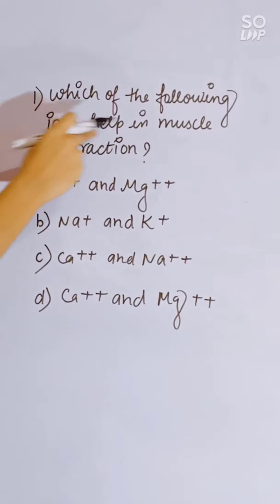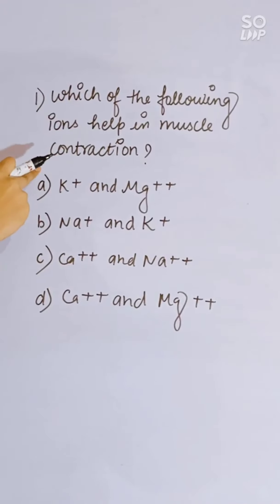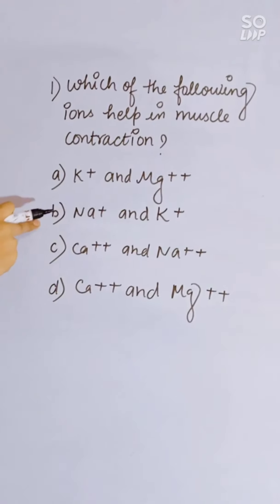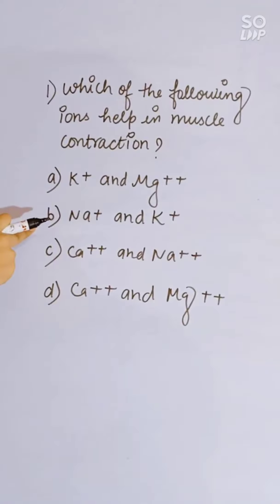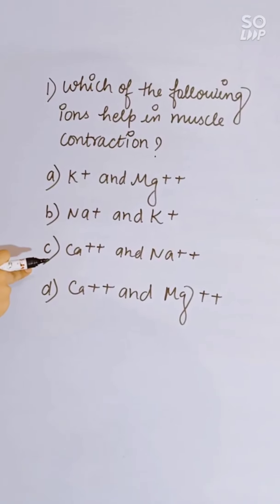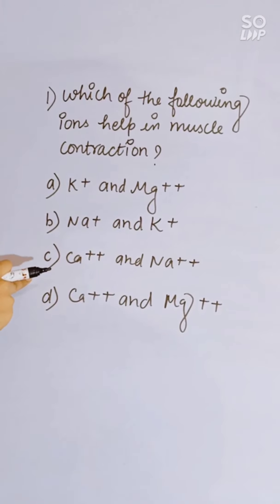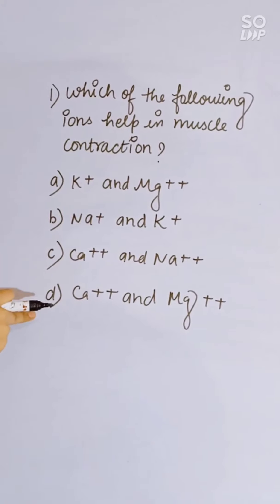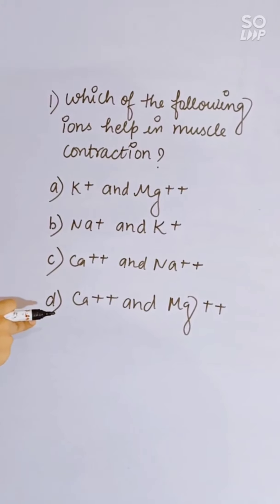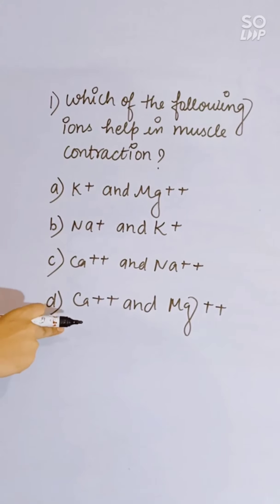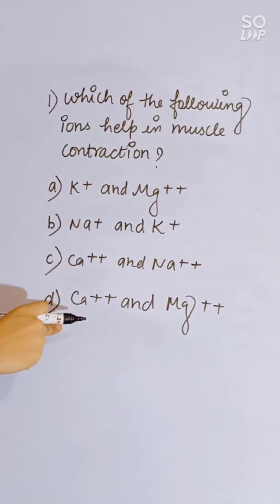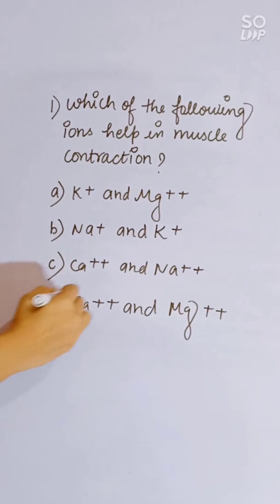Which of the following ions help in muscle contraction? Options: K+ and Mg++; Na+ and K+; Ca++ and Na+; or Ca++ and Mg++. Ca++ and Mg++ help in muscle contraction. Correct answer is D.